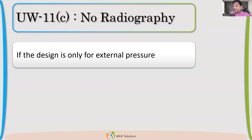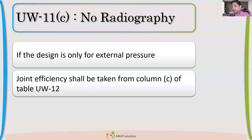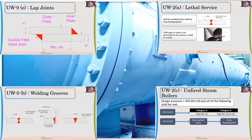If we have only external pressure applicable, then radiography is not required as per code. You don't have to perform radiography if you only have to design for external pressure. If there is no radiography, then from where will we take the joint efficiency? From Column C of UW-12. Column C applies when there is no radiography. I hope you understood this part. Stay tuned for more videos related to welding requirements.